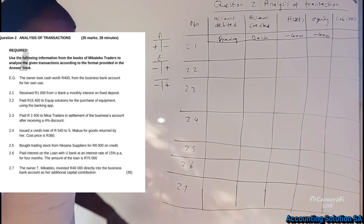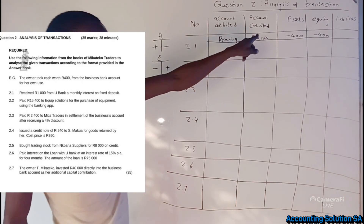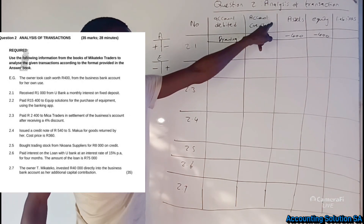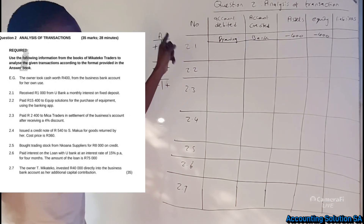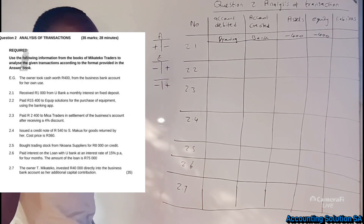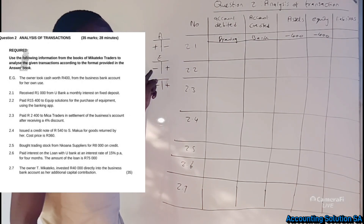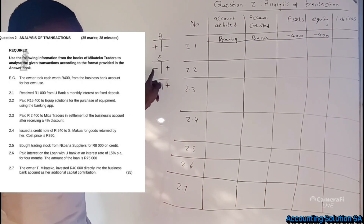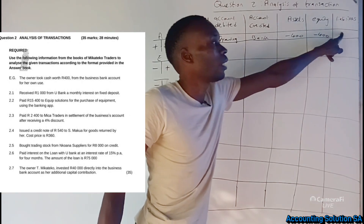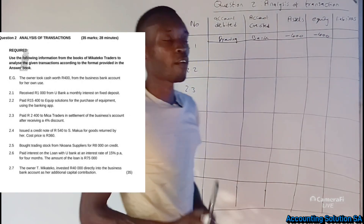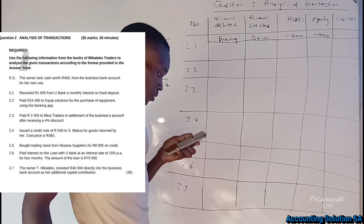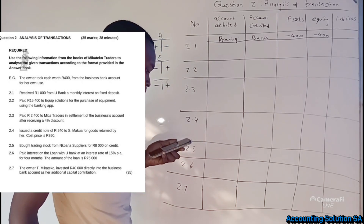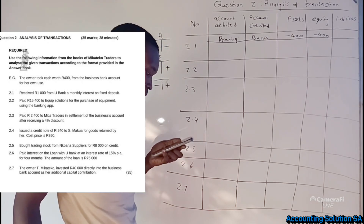Bank is credited, and because bank falls under assets we show a minus. Equity is debited so we show a minus as well. Liability is not affected in this transaction. Now let's move to 2.1: received R1,000 from bank as monthly interest on fixed deposit.